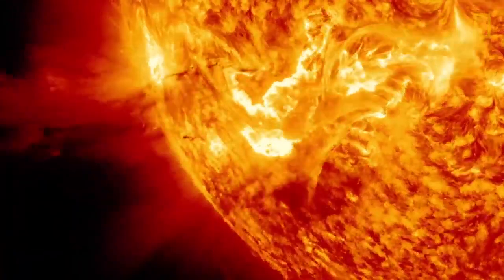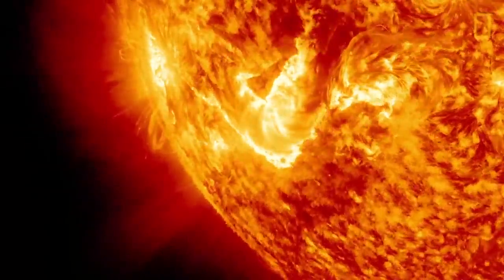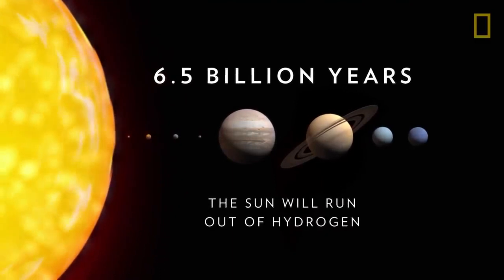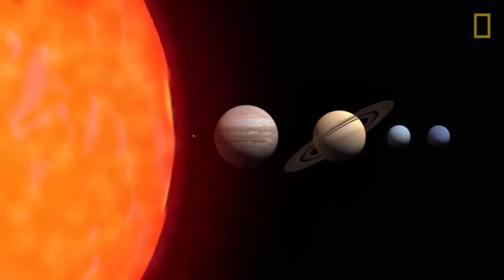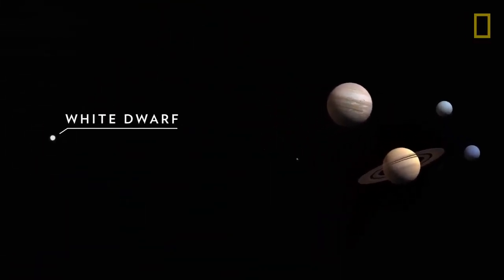Despite its size and strength, the sun will not last forever. In about 6.5 billion years, it will run out of its hydrogen fuel, expand to envelop Mercury, Venus, and even Earth, and then collapse into a small star known as a white dwarf.